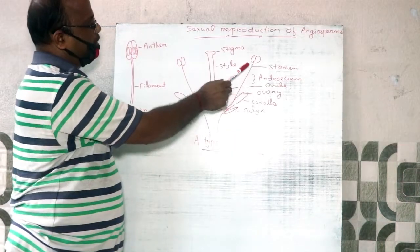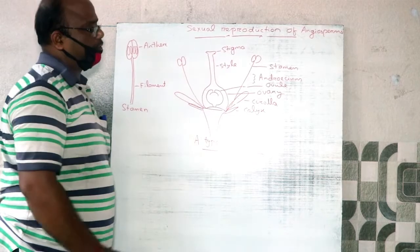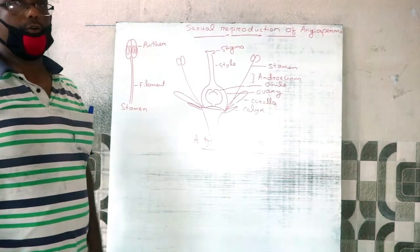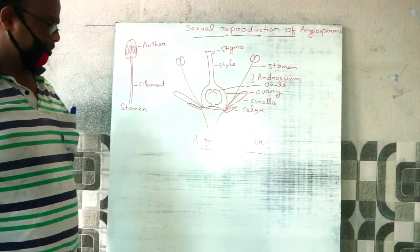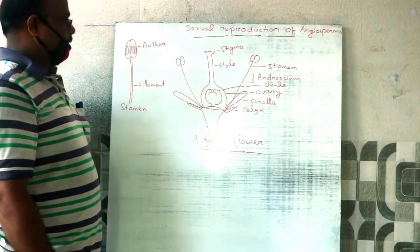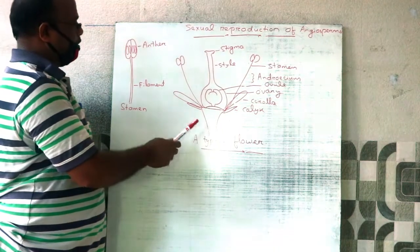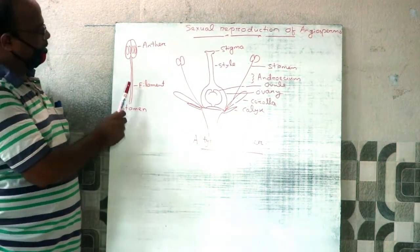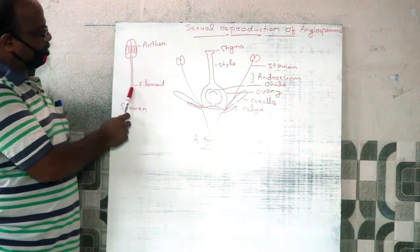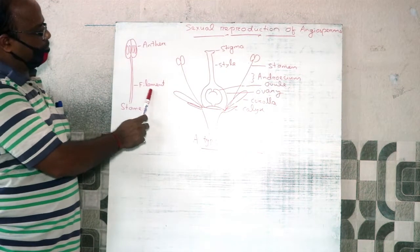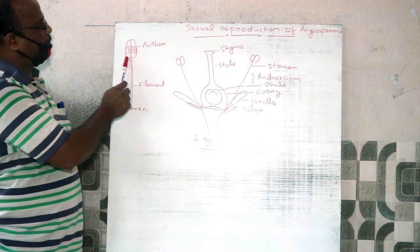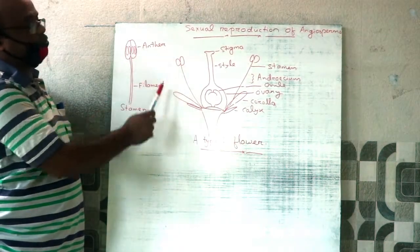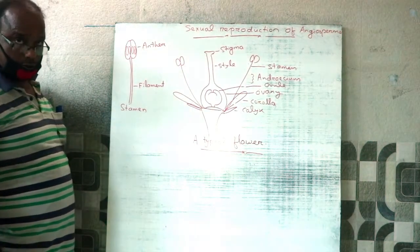All the stamens of a flower are collectively called the Androeceum. Each stamen has two parts: the stalk of the stamen is called the Filament, and the upper fertile part of the stamen is known as the Anther.